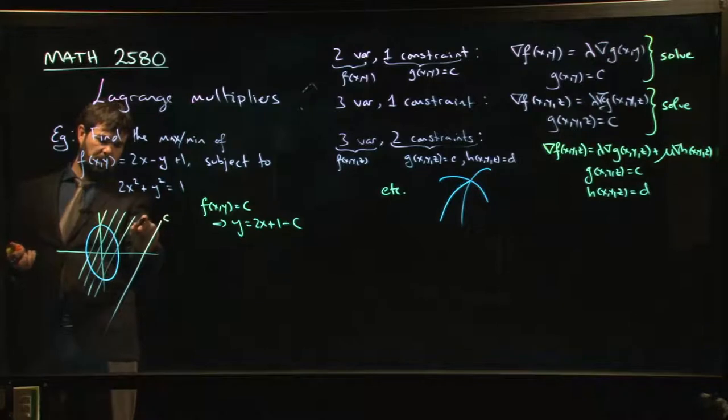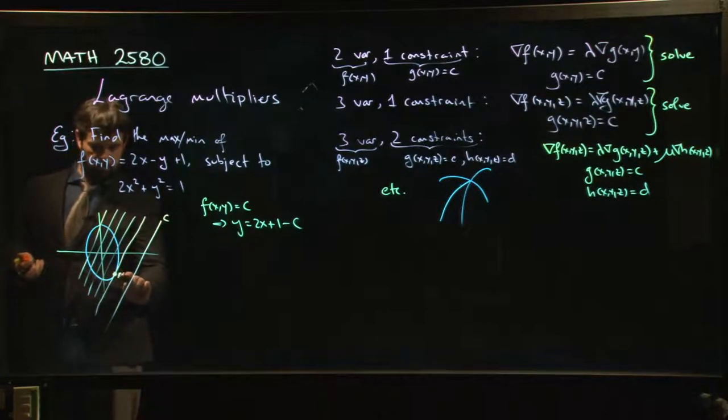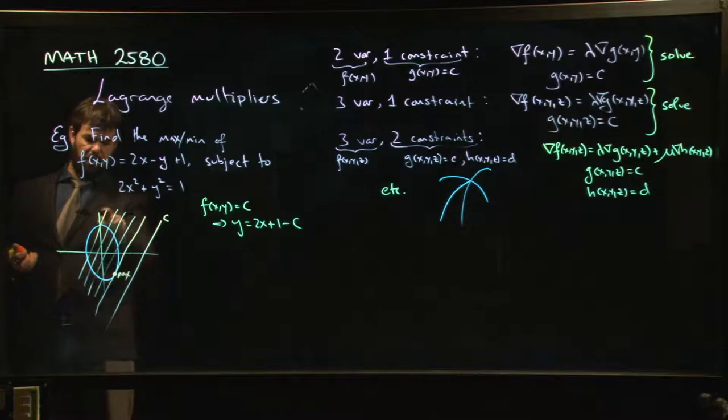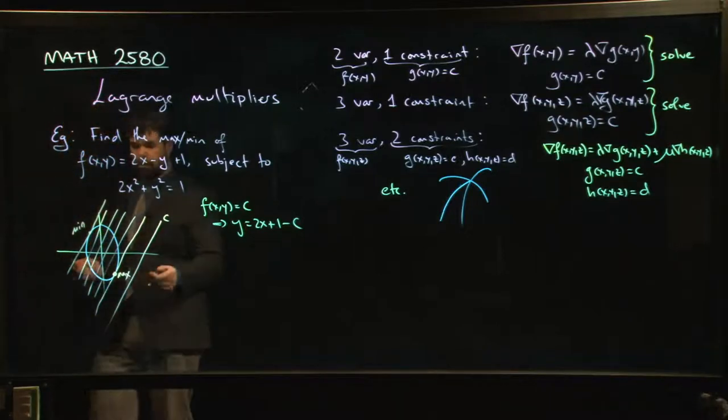And that's going to be the one that only just touches our constraint curve. So that's going to be the max. And the min is going to be the smallest value of c that just touches. There's our minimum.